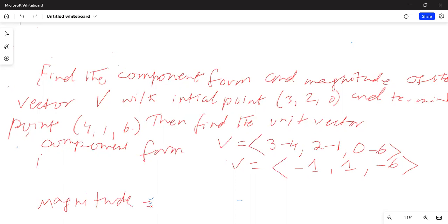So magnitude is equal to ||v|| is equal to, inside the radical, 1 squared plus 1 squared plus 6 squared, which is equal to square root of 1 plus 1 plus 36, which is square root of 38.